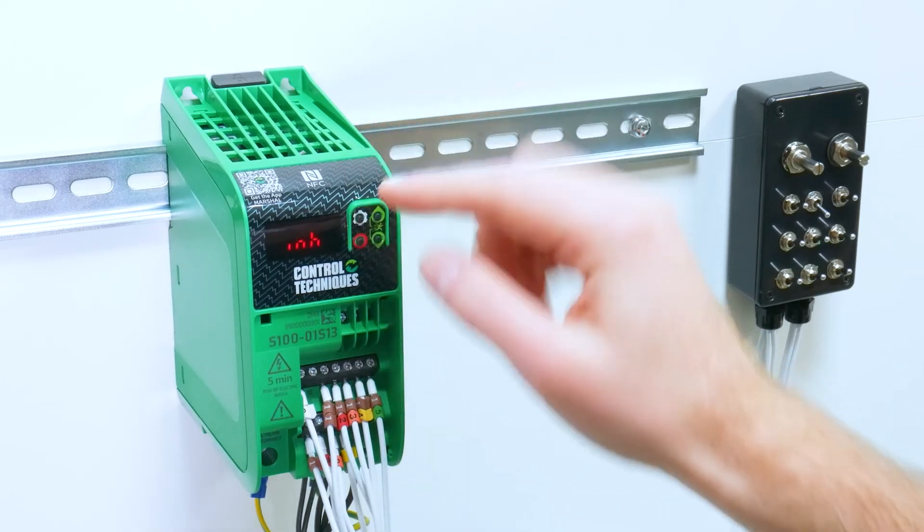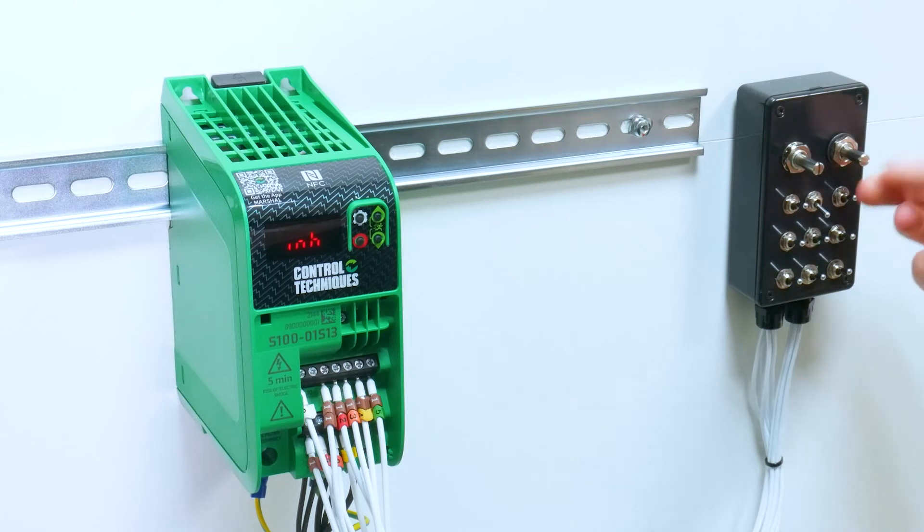So I'm in an inhibit state, so I need to first switch to my local reference. I then want to give the drive an enable and the display will switch to ready.